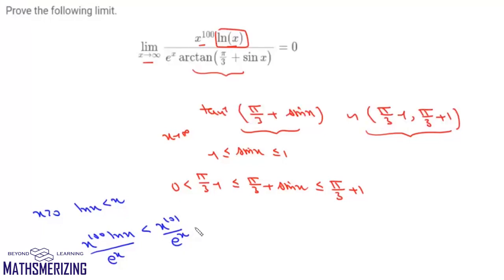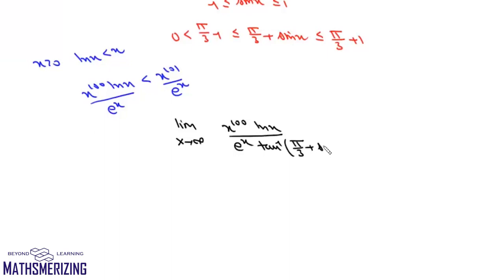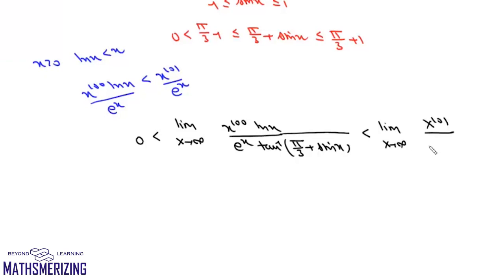Now we consider the limit as x tends to infinity of x to the power 100 times log x upon e to the power x times the nonzero oscillating value, say c, from the tan inverse term. Since every expression in this function is positive, this limit is greater than 0 and less than the limit as x tends to infinity of x to the power 101 upon e to the power x times c.